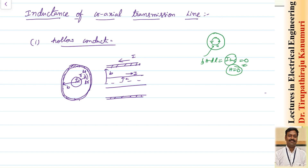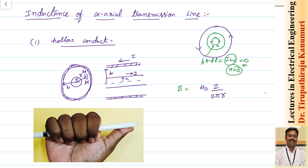For r ≥ A, the flux density is B = μ₀I / (2πr). This comes from applying Ampere's law on a circular path of radius r: the closed integration of H·dl equals H × 2πr, which equals the enclosed current I. So H = I / (2πr) and B = μ₀H = μ₀I / (2πr).